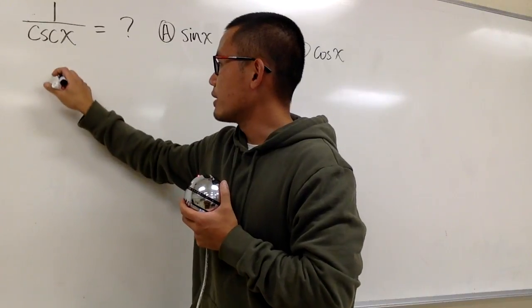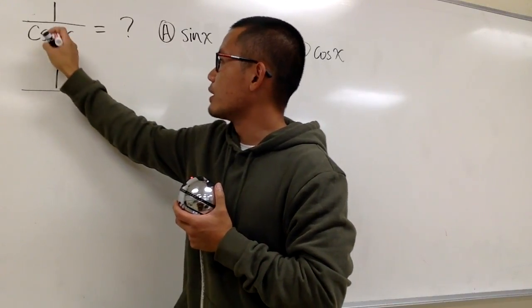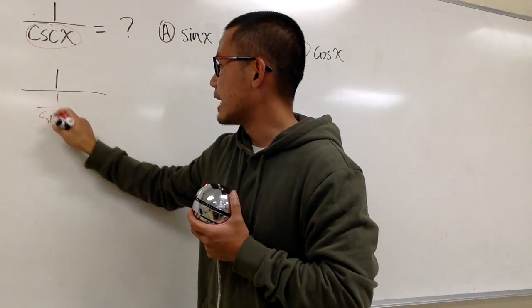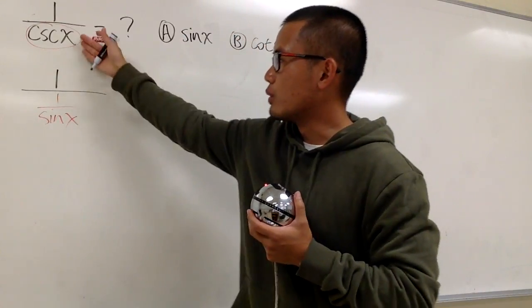Right here, if you would like, you can put down the 1 on top, over, and for the cosecant x part, I will write this down as 1 over sine x, and we have to know this really well.